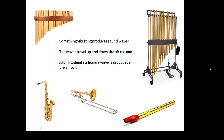Now, in musical instruments, we get something else — we get a stationary wave or a standing wave. What happens is that something produces a vibration; it might be a reed or some kind of disturbance in the air. The waves travel up and down the tube and they interfere with each other, producing constructive interference. We get a longitudinal stationary wave, very similar to what we get in guitar strings.